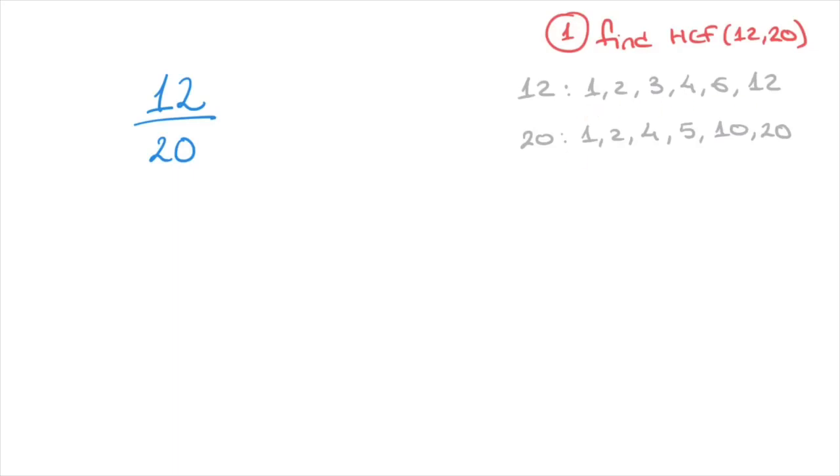Now, looking at the two lists of factors we have here, we can see that 12 and 20 have several factors in common. Indeed, they both have 1, they both have 2, but the largest factor that they both have in common is 4. And 4 is the highest common factor of 12 and 20.